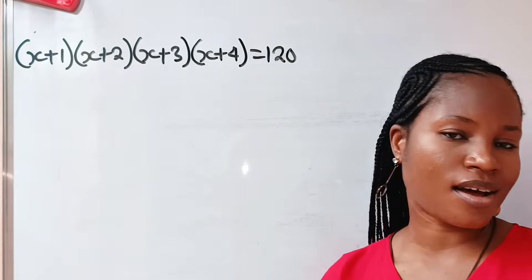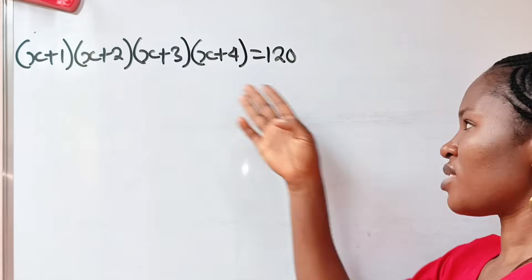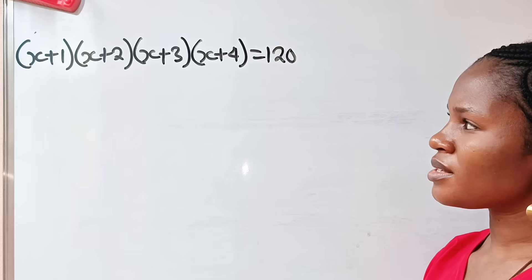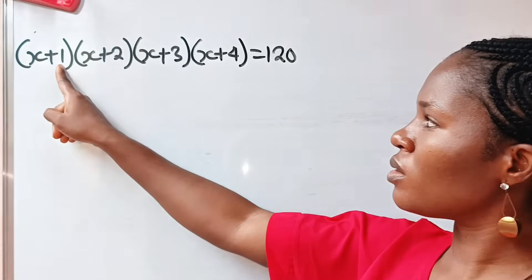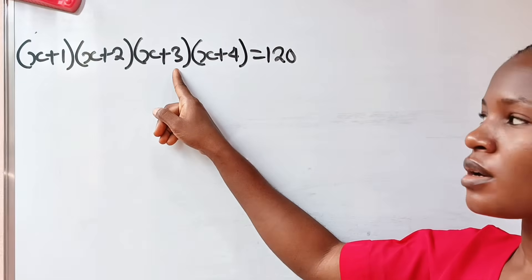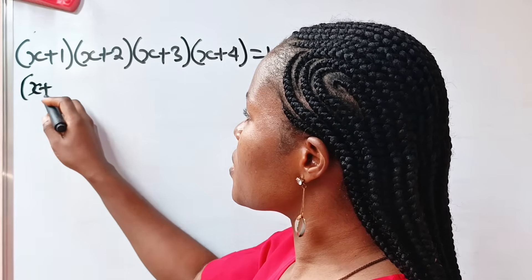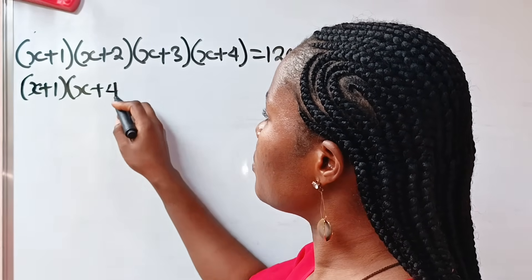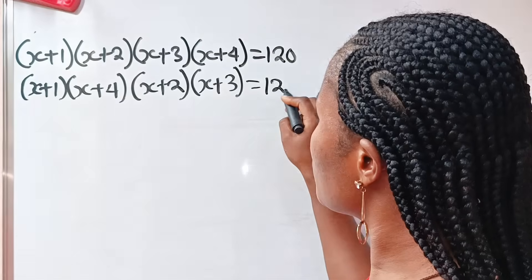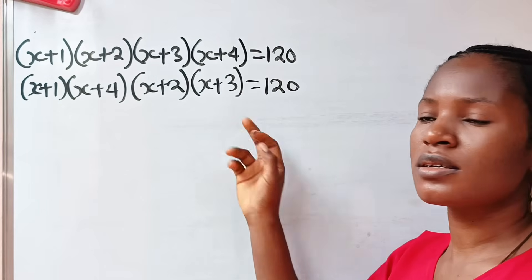Hi everyone, welcome back to my channel. Today we are asked to solve for x. Now you don't just expand these straight away — if you do that it's going to be difficult. Notice that if you add one to four you get the same result as adding two to three. So let's bring these pairs together: x plus one multiplied by x plus four, then multiplied by x plus two multiplied by x plus three, is equal to 120.